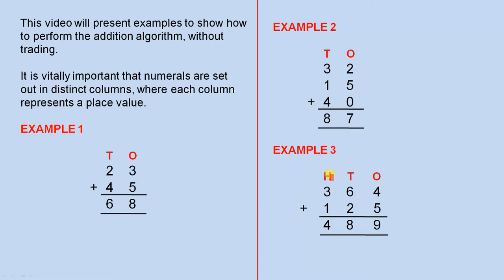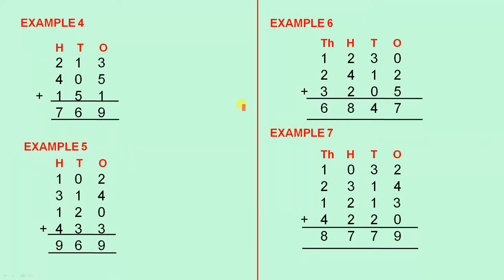Example three. We have introduced the hundreds column. So we have 364 plus 125. When you add the numbers in the ones column you get 9, add the numbers in the tens column you get 8, and add the numbers in the hundreds column you get 4. So the answer is 489.